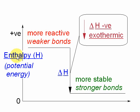On the y-axis we have enthalpy with the chemical symbol H, and this is a measure of chemical potential energy. Higher up we have substances which are more reactive and have weaker bonds, whereas further down are more stable substances with stronger bonds.